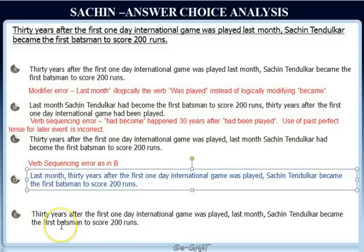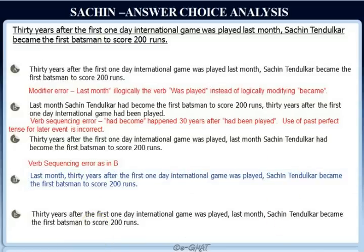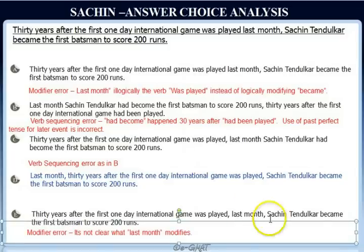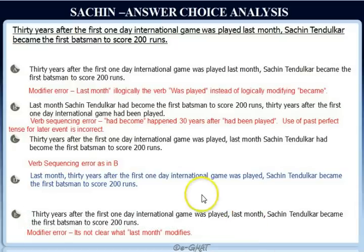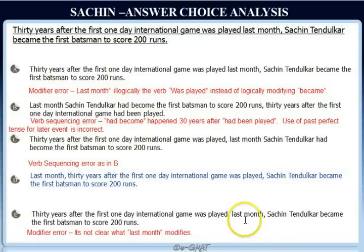Choice E reads: '30 years after the first one-day international game was played, last month, Sachin Tendulkar became the first batsman to score 200 runs.' There are no verb sequencing errors here. But the modifier is clearly incorrect — because of the placement of the commas, we don't know if 'last month' belongs in the first clause or grammatically in the second clause. It's not clear what 'last month' is modifying, so this sentence also has a modifier error. Clearly, choice D is the correct answer.